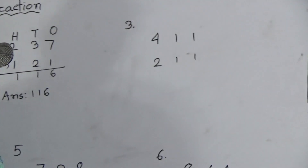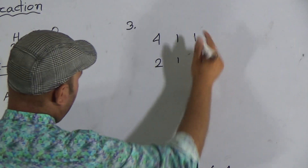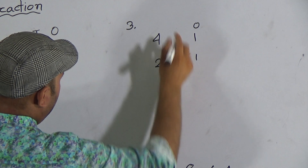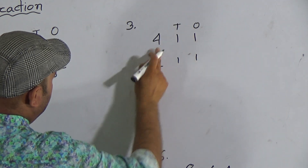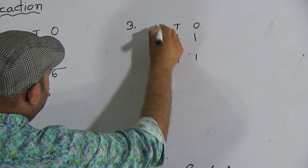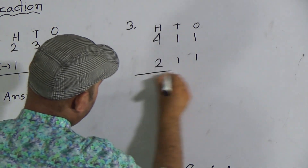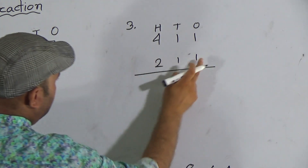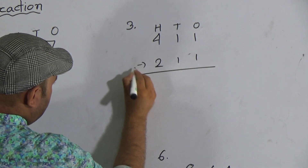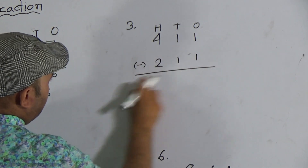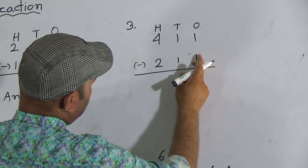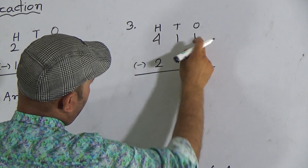Now the next one is question number three. One and one both are the ones place digit, again one and one both are the tens place digit, four and two is the hundreds place digit. So we have to subtract two hundred eleven from four hundred eleven. Use the subtraction sign and draw a line. Now one from one — after subtracting one from one — it will be zero.